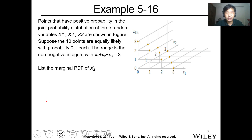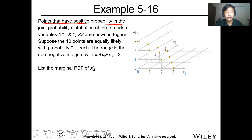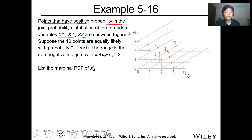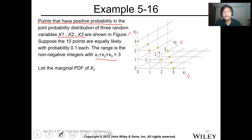Example for the mean using discrete random variables with multiple variables: We have points with positive probability in the joint distribution of three random variables x1, x2, x3 shown in a figure. There are 10 points total, and each is equally likely, so each has probability 1/10 = 0.1. The range is non-negative integers where x1 + x2 + x3 = 3.